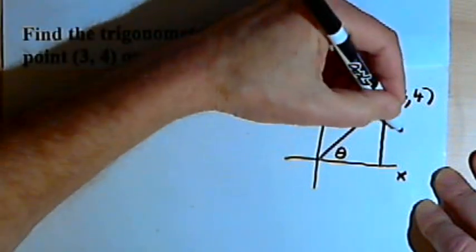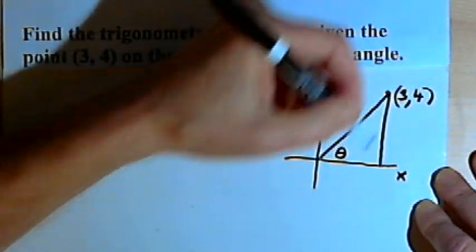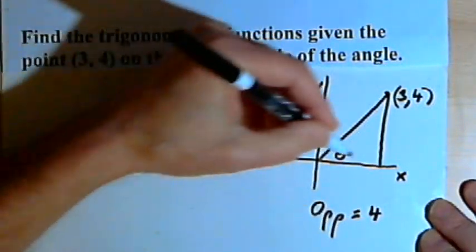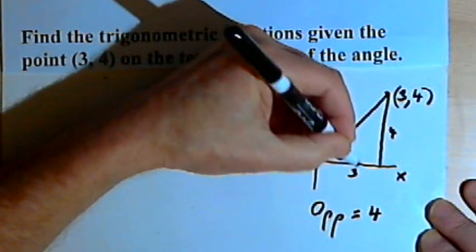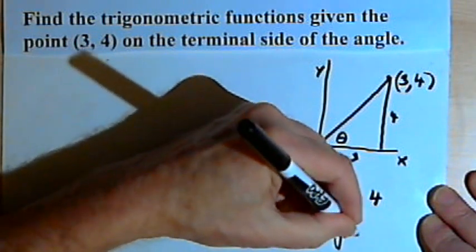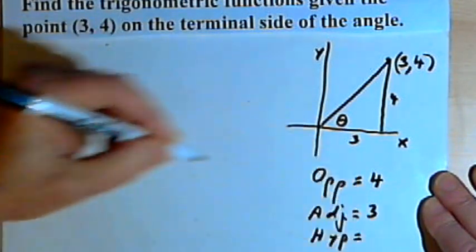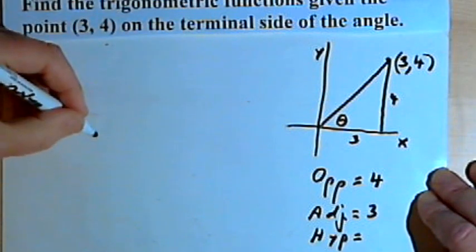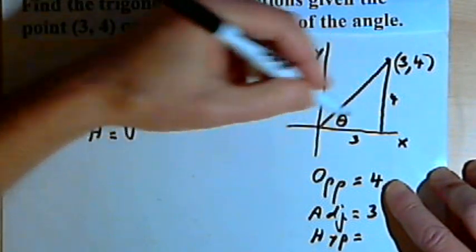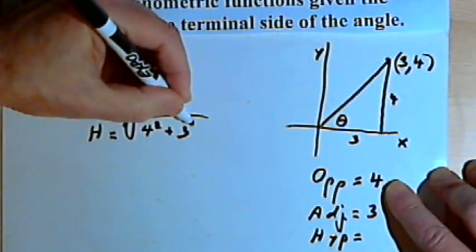We can say that the side opposite to theta has a length of 4 — that's the y-value I was given. So the opposite side has a length of 4. We can say that the adjacent side has a length of 3 — that's the x-value I was given. And if I want to find the hypotenuse, I can use the Pythagorean theorem. The hypotenuse is going to be equal to the square root of the opposite side squared — that's 4 squared — plus the adjacent side squared — that's 3 squared.